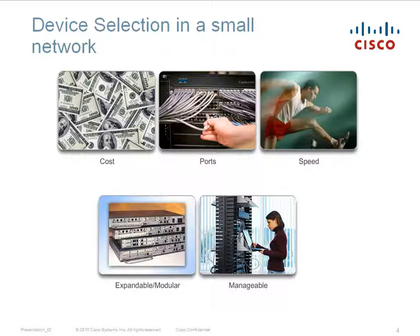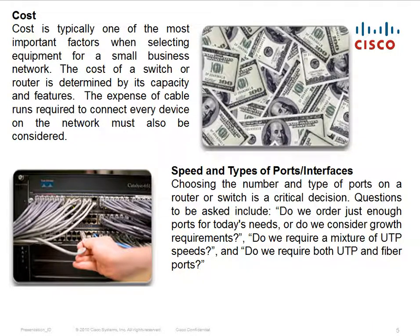One of the first design considerations when implementing a small network is the type of intermediate devices to support the network. Cost is typically one of the most important factors when selecting equipment for a small business network. The cost of a switch or router is determined by its capacity and features. The expense of cable runs required to connect every device on the network must also be considered.